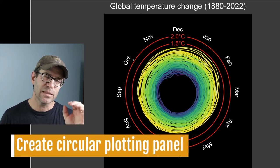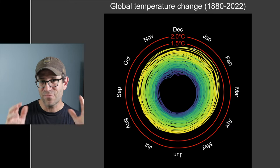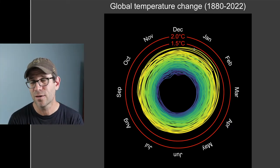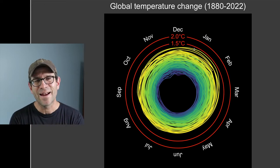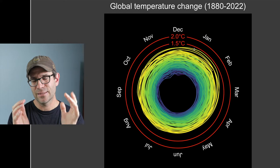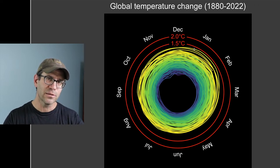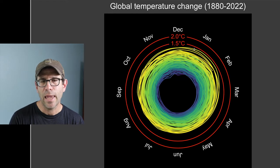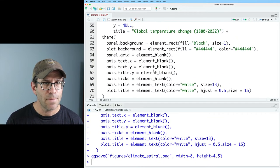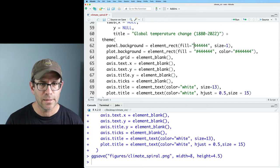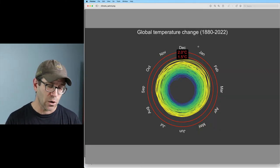Now I want to tackle the black circular background. Ed's version has a black circle on the inside and dark gray everywhere else, whereas I have a black square. What if I turn everything dark gray and put a black pie chart behind everything? A circle is just a pie chart that's 100%. So I'll change the panel background to '#444444' dark gray, and then add a black pie chart as a background layer.